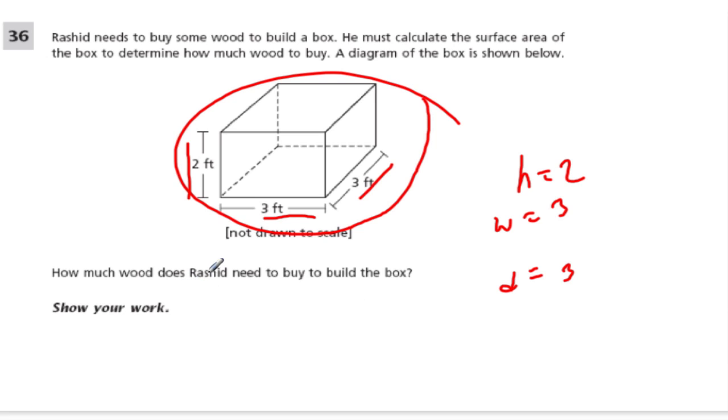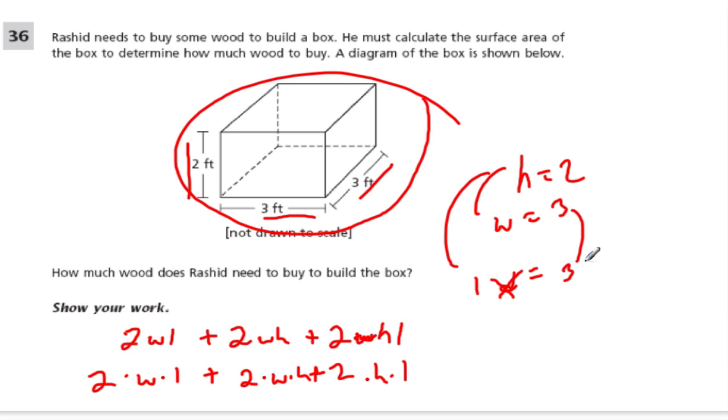How much wood? Well, this part of the test will have an equation sheet, and what you'll probably see is the equation for surface area written as 2WL plus 2WH plus 2HL. So let's change depth to length and now we can plug it in. 2WL means 2 times W times L plus 2 times W times H plus 2 times H times L. Really, what we're doing is just multiplying all these different combinations right here. We have 2 times 3 times 2, and then 2 times 3 times 2, and then 3 times 3 times 2.